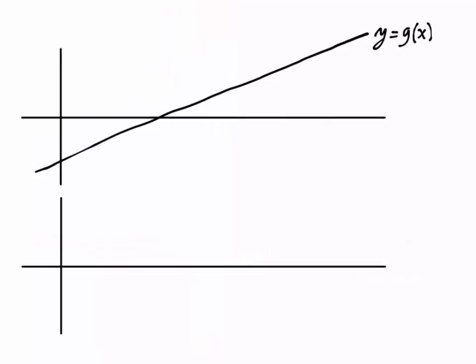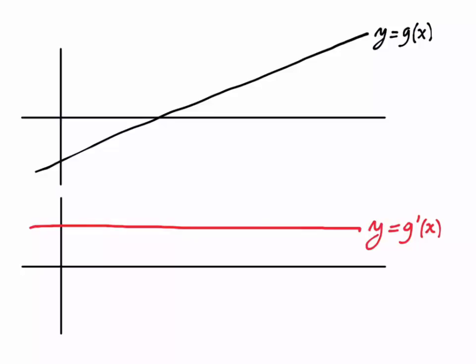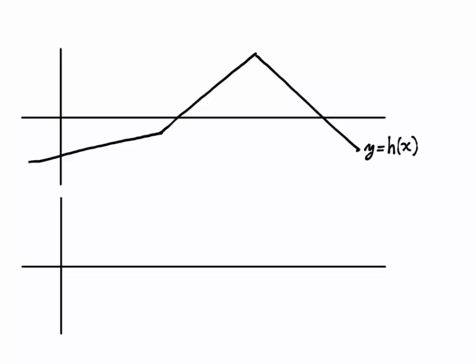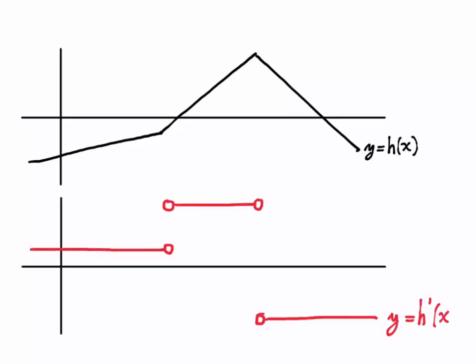Let's look at another example. Here's a function we'll call g — it's just a line. Lines have the same slope everywhere along the line, so the derivative function y equals g prime of x would look like a horizontal line, because it has the same value everywhere, and that value is the slope of g. Next example: here's a function we'll call h — it's piecewise linear, with a small positive slope, then a big positive slope, then a negative slope. At the junctions of the pieces where we have corners, the derivative does not exist — h prime is undefined at those two junction points. We'll talk more about differentiability and non-differentiable points later.